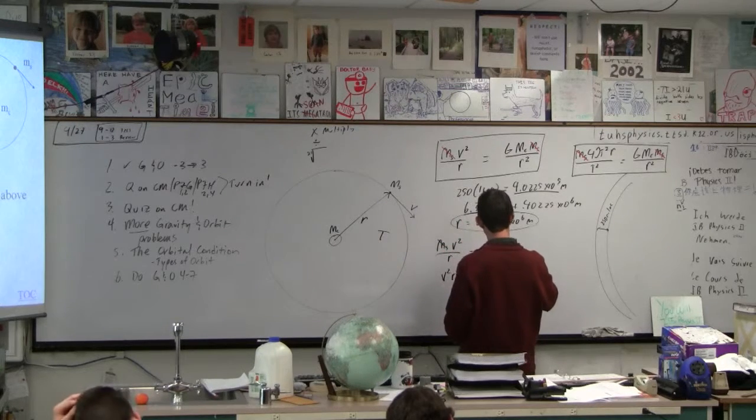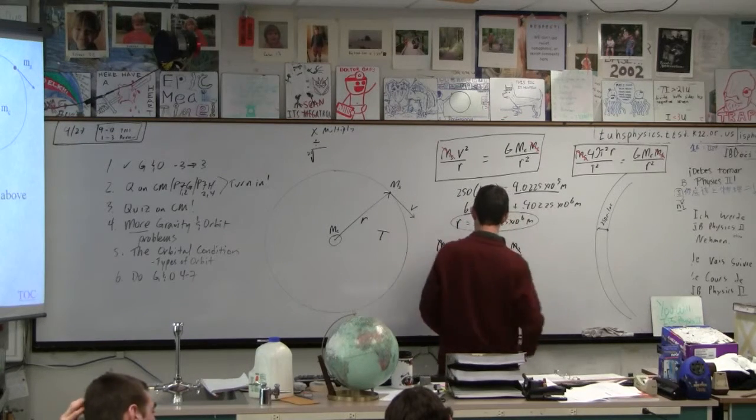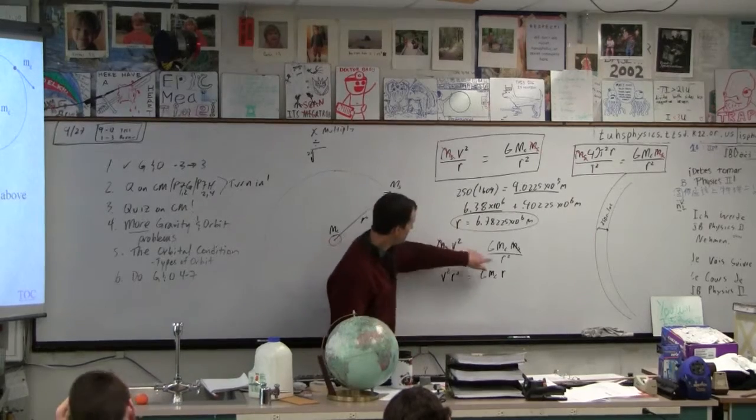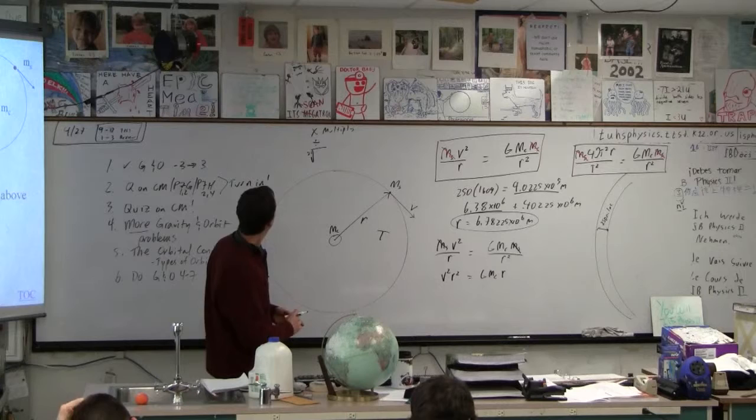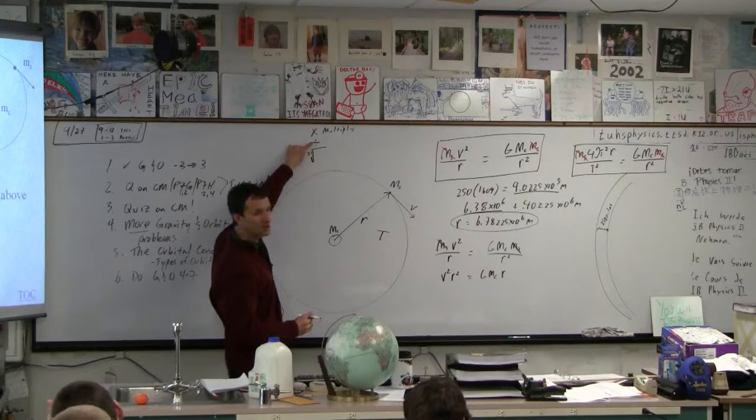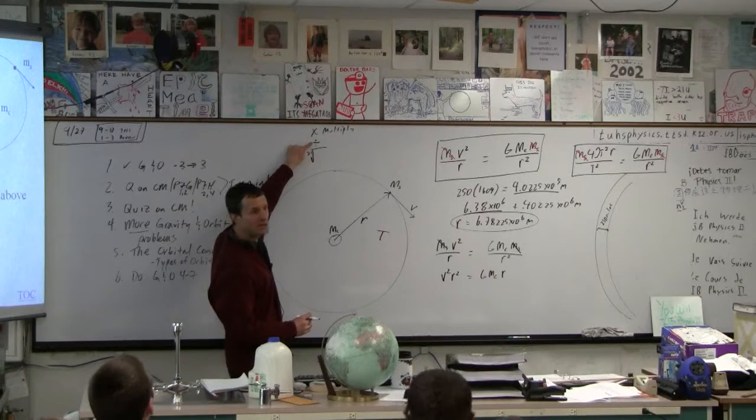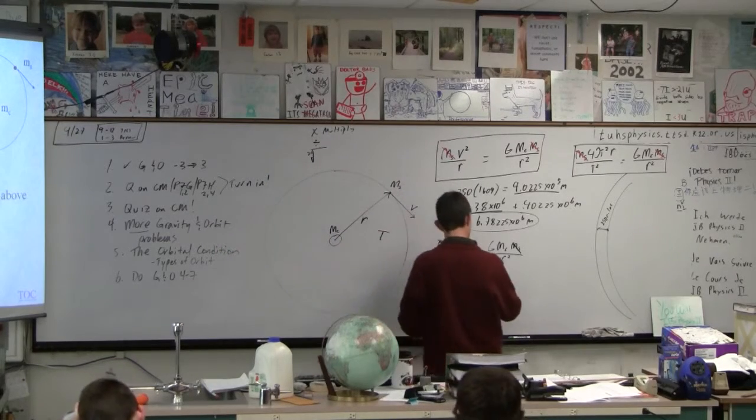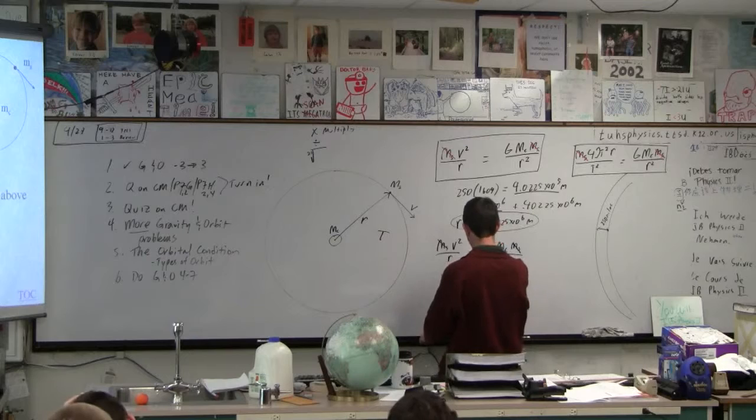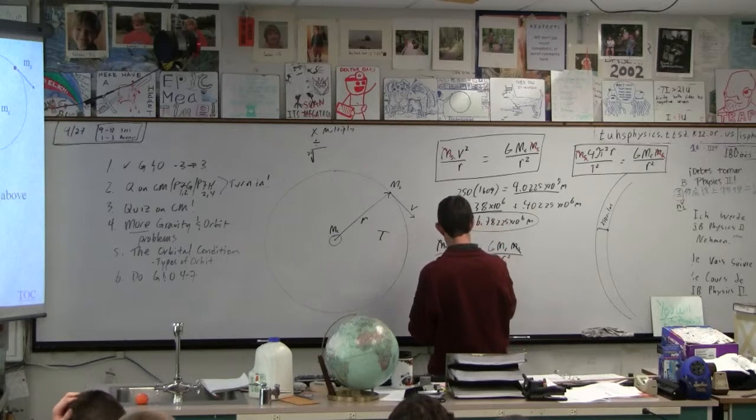Right? Equals GM over R. So this times this is this times this, and then what's our next step? Divide, right? What are we trying to get all by itself? Trying to get V by itself. So I'm going to divide both sides by R squared, correct? There we go.